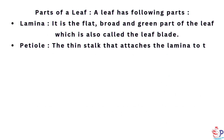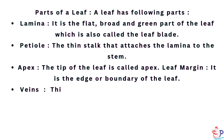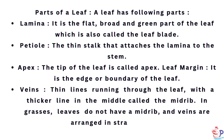A leaf has the following parts. Lamina is the flat, broad and green part of the leaf, also called the leaf blade. Petiole is the thin stalk that attaches the lamina to the stem. Apex is the tip of the leaf. Leaf margin is the edge or boundary of the leaf. Veins are thin lines running through the leaf, with a thicker line in the middle called the midrib. In grasses, leaves do not have a midrib, and veins are arranged in straight lines.